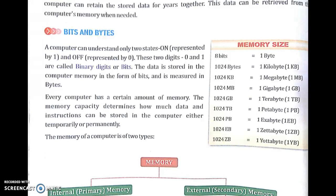The data is stored in the computer memory in the form of bits and is measured in bytes. Every computer has a certain amount of memory. The memory capacity determines how much data and instructions can be stored in the computer, either temporarily or permanently. Now you can see on the right side the memory size chart.